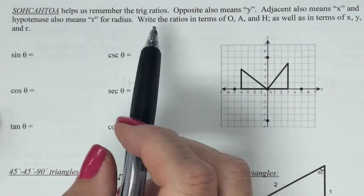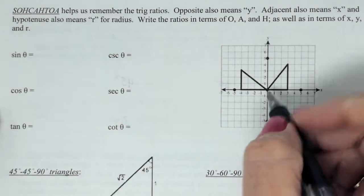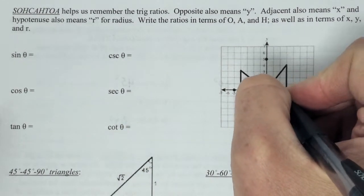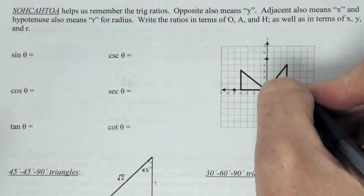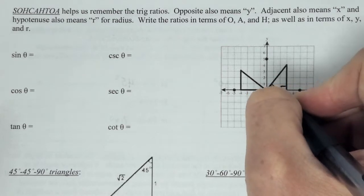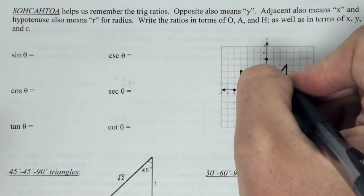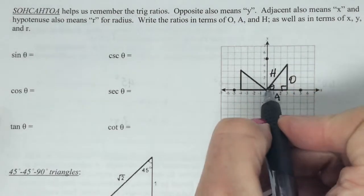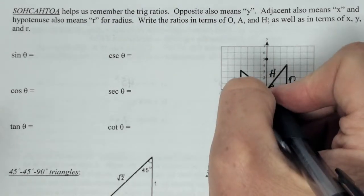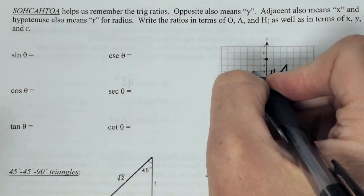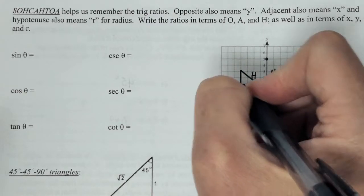All right. So SOHCAHTOA, that's just to help us remember the trig ratios. As far as doing this, though, let's look at this angle here, theta. So if I label this, here's my theta. Here's my right angle. This would be adjacent. This would be opposite. And this would be hypotenuse. Theta always has to be at the origin. Over here. Here's my theta. This is going to be the hypotenuse, because it's across from the right angle. This is adjacent. And this is opposite.